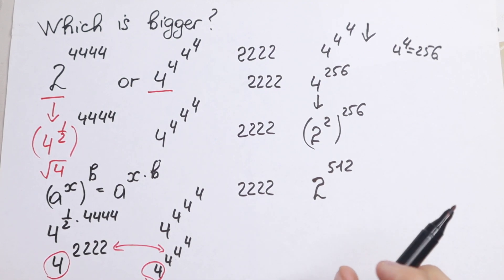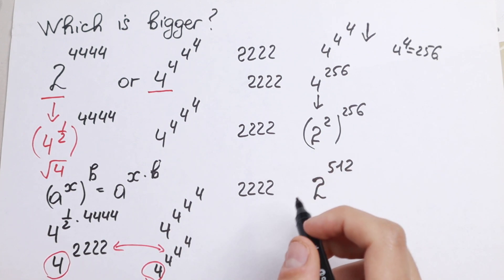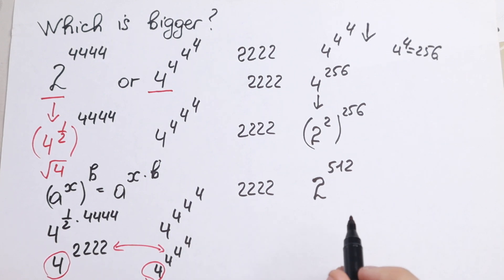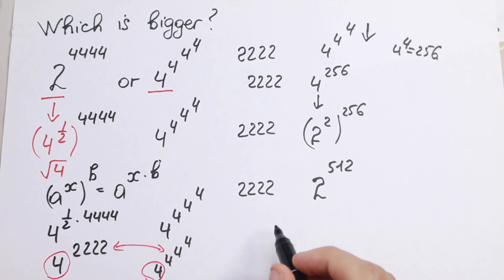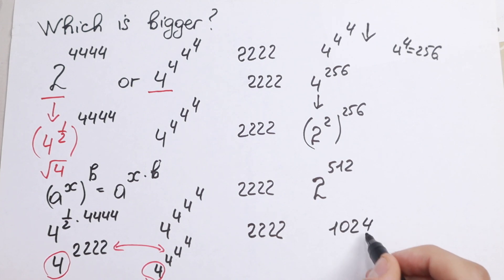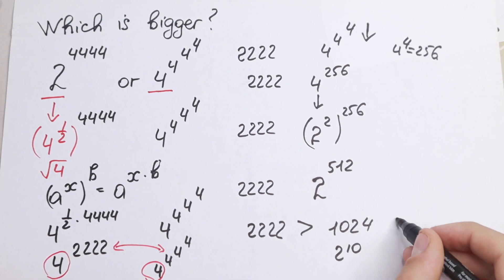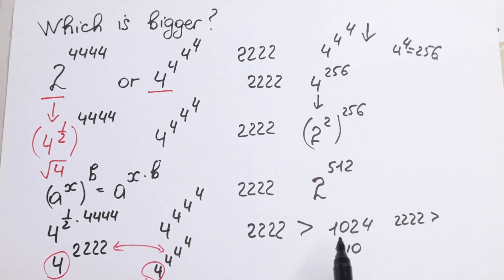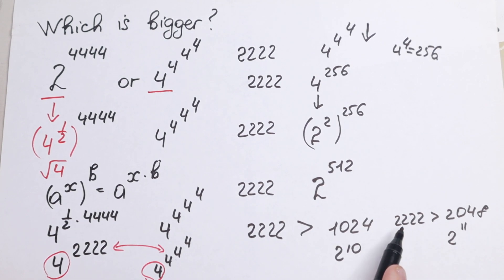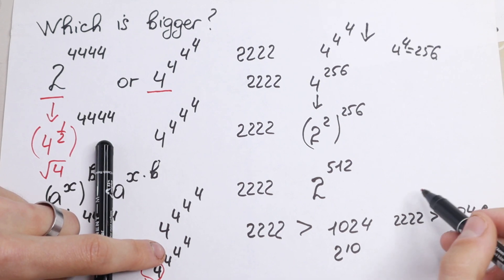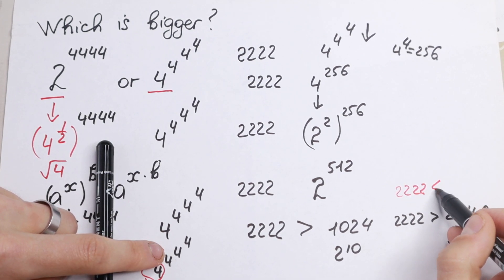Now we compare these two numbers. How can we express 2,222 in terms of a power of 2? Here's a good trick. We know 1,024 equals 2 to the 10th power, and 2,222 is greater than 1,024, so 2,222 is greater than 2^10. Multiplying by 2 gives 2,048, which is 2^11, and 2,222 is still greater than 2^11. But if we multiply once more, we get 4,096, so 2,222 is less than 2^12.